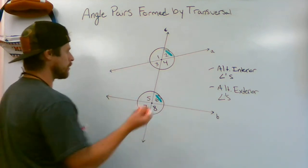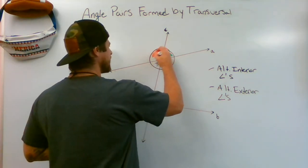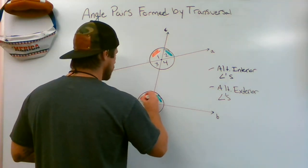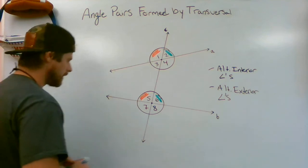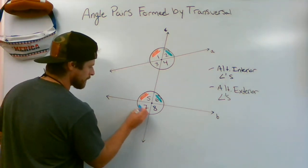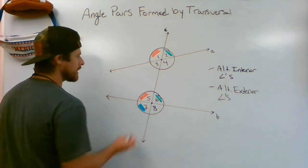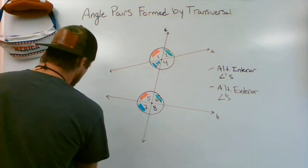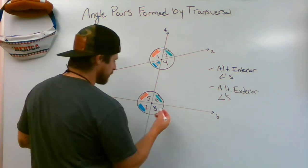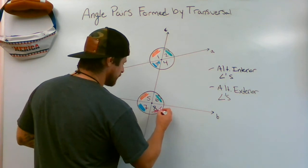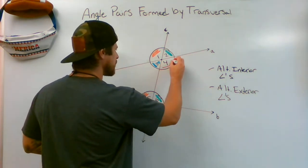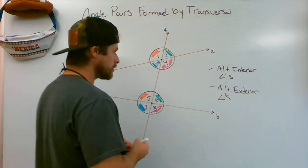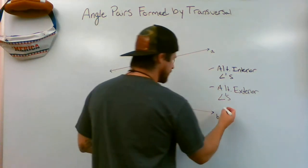In orange, angle one is in the top left — its corresponding angle is five, also top left. Bottom left: seven corresponds to three. And in pink, bottom right: angle eight corresponds to angle four. So you need to know alternate interior, alternate exterior, and corresponding angles.